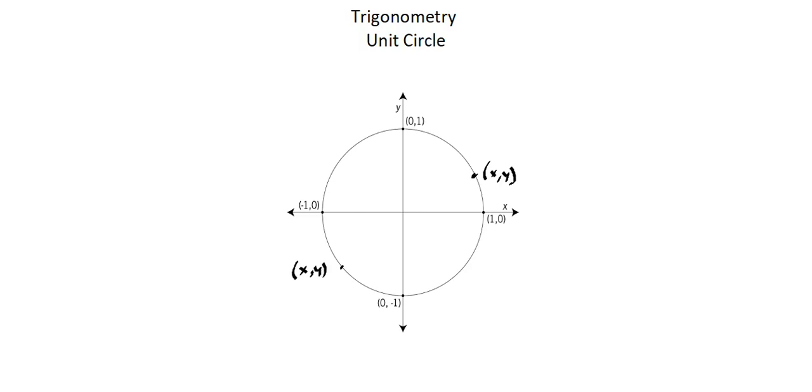We can reference the section of the circle based on our quadrants, which come from coordinate geometry. Quadrant 1, quadrant 2, quadrant 3, and quadrant 4, which will be important for us in later calculations.